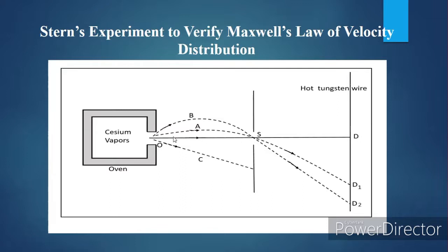If there is no gravitational field, then the cesium atoms coming out of the oven will move in a straight line. Gravitational force will not pull them in the downward direction, and they will reach point D.